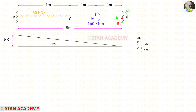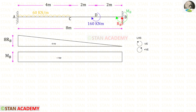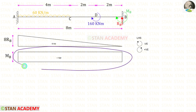First, let us take the vertical reaction RB. It is acting in the anticlockwise direction so it will be positive, and the distance is 8. So we get 8RB, which gives a triangular shaped diagram. Now let us take the moment MP of 160. We assume it is acting in the clockwise direction so it will be negative, giving a rectangle shaped diagram.